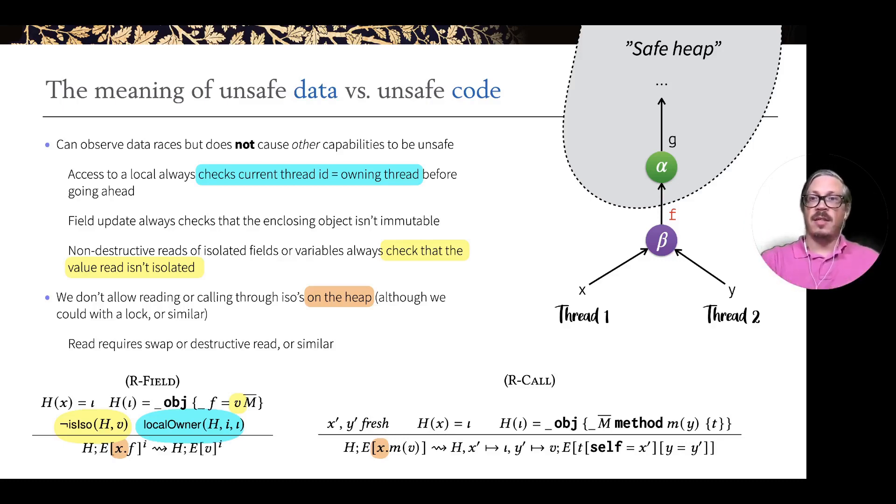In this case, I have an example. I have two threads, one and two, X and Y pointing to the same object beta. Beta has a field F that's pointing to an ISO. So F is the only pointer to this ISO in the system. These two threads can witness the data race on F. But F is going to be destructively read, so when you access F, you'll have to nullify it because we have to protect this no aliasing property of the ISOs.